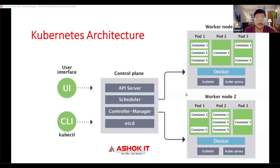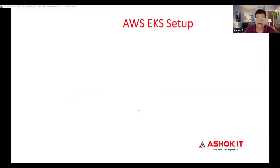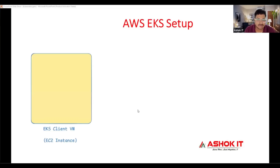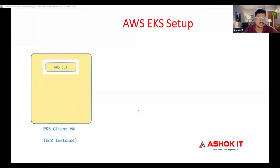In this video we are going to understand how to set up a Kubernetes cluster using AWS EKS service. First, I will take one EC2 instance that I am using as an EKS client VM. By using this EKS client VM I will create the EKS cluster and deploy applications in it.